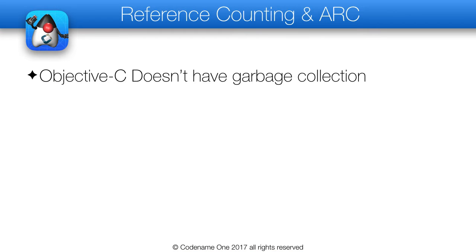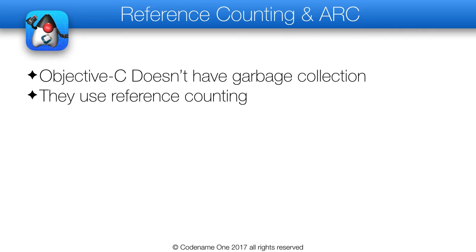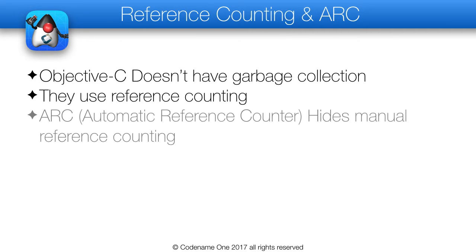Objective-C and Swift objects don't have a garbage collector like Java does. Instead they use reference counting, which means every object has a number representing the areas of the code that need it. When I don't want an object deleted I invoke myObject.retain and it's saved. When I don't care about it anymore I do myObject.release. A retain operation increments a number and a release call decrements it. When the number reaches zero the object is released.